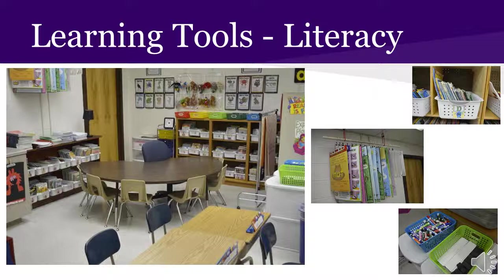In addition to the morning meeting rug space, another important space is the reading table. It's one of the many spaces and methods to teach reading skills. This is where small group instruction and reading happens with one teacher and three to six students. Teachers work with students who are at or near similar reading levels and working on developing some of the same skills. This small group personalized instruction ensures ongoing development of reading skills and is an opportunity for teachers to monitor that growth.